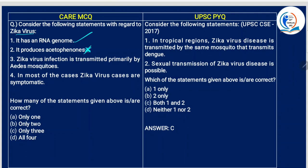Zika virus infection is transmitted primarily by the Aedes mosquito — yes, we all know this. The fourth statement says in most cases Zika virus infection is symptomatic. Most cases actually do not show symptoms — what little we hear in the news is only a minute population. So this is also wrong. Only two statements are correct.